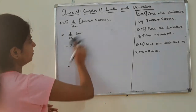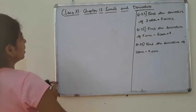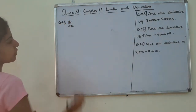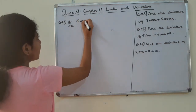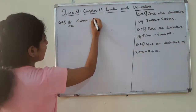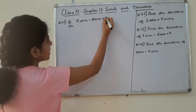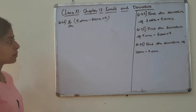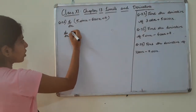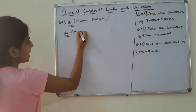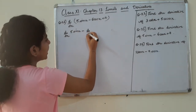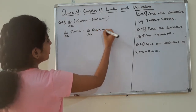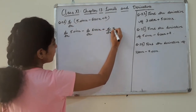Question number 23. Find the derivative of 5 sin x minus 6 cos x plus 7. We apply the sum rule: d/dx of 5 sin x minus d/dx of 6 cos x plus d/dx of 7.